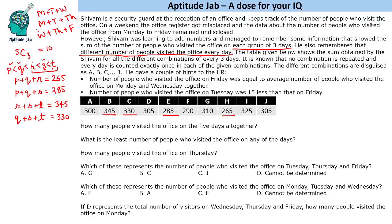Now, if we add all these values, we know these are different combinations where three days' data is given each time. Three days times 10 combinations gives 30, and we have five days, so each day appears six times. This means that the sum of all the combination totals equals six times the total number of visitors.